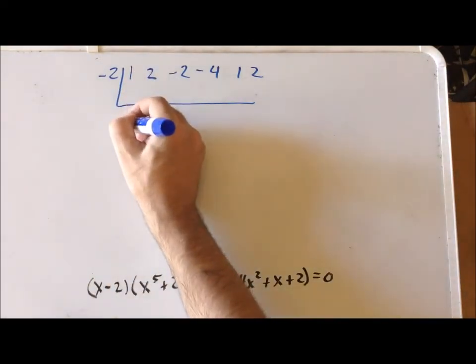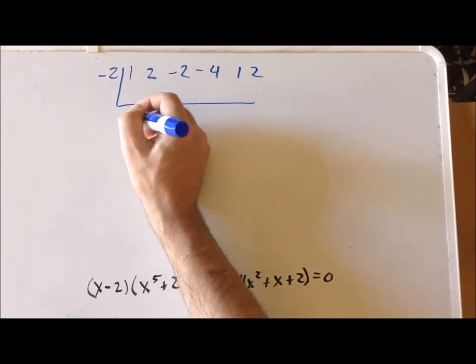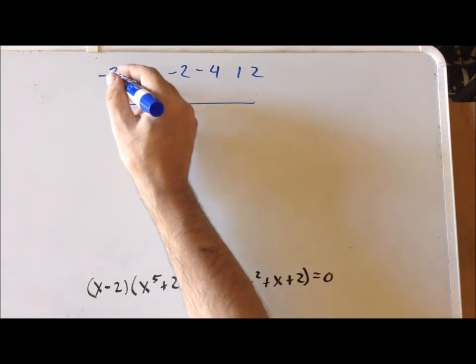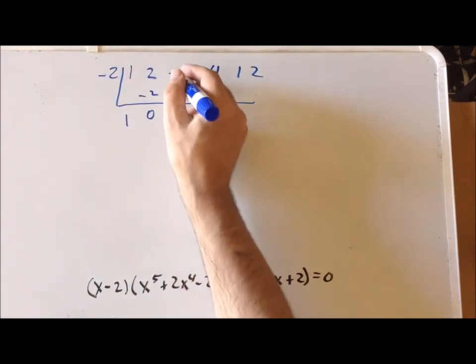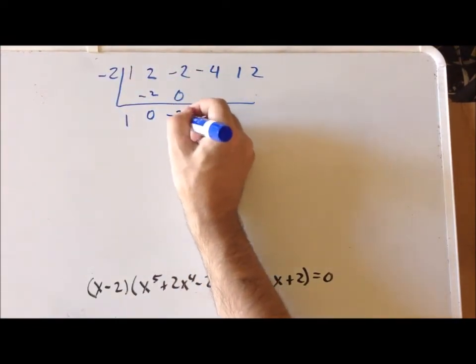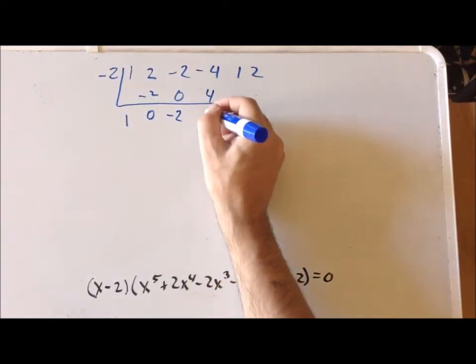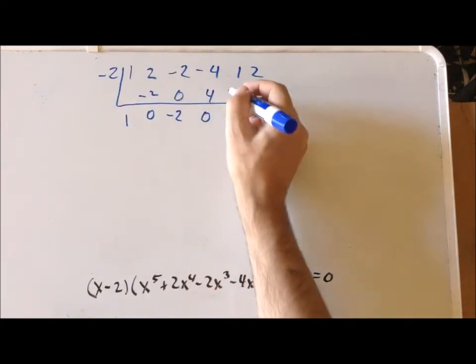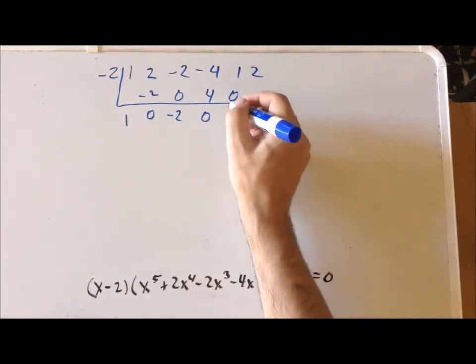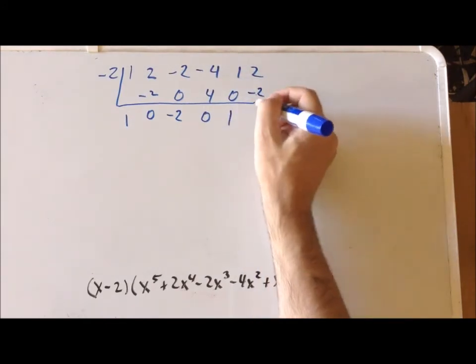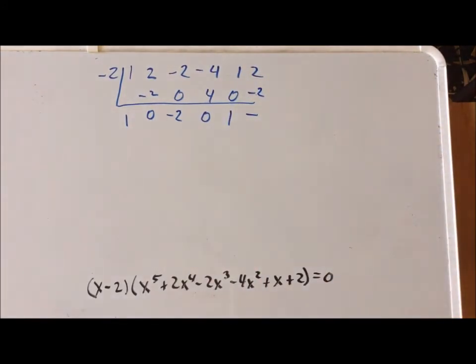1, bring down. Minus 2 times 1 is minus 2. So this is 0. Minus 2 times 0 is 0. Minus 2 plus 0 is minus 2. Minus 2 times minus 2 is plus 4. Add these together, we get 0. Minus 2 times 0 is 0. 1 plus 0 is 1. Minus 2 times 1 is minus 2. So again, we get a remainder of 0, which tells us that we have correctly chosen the root.